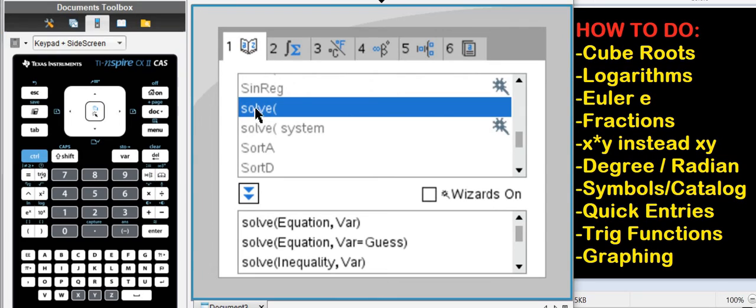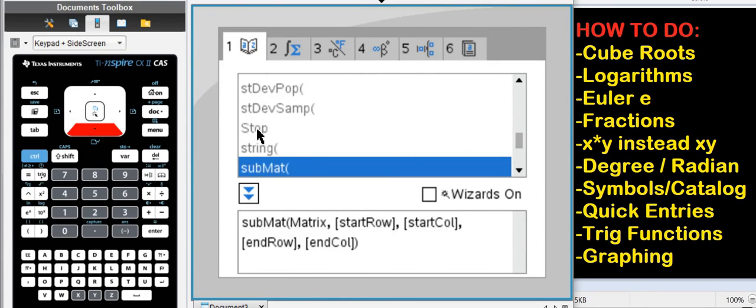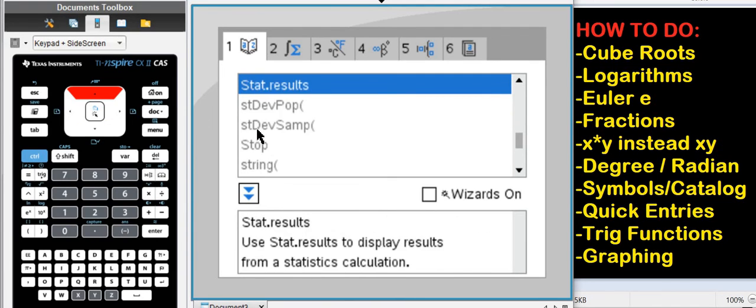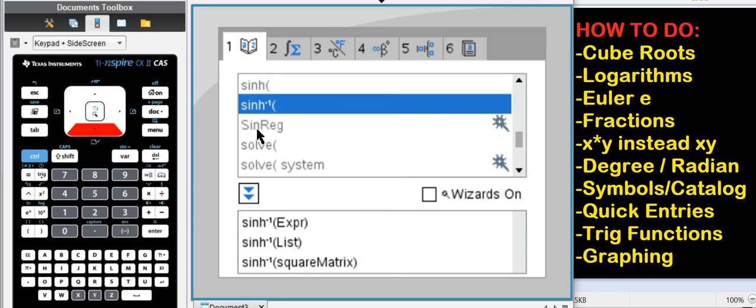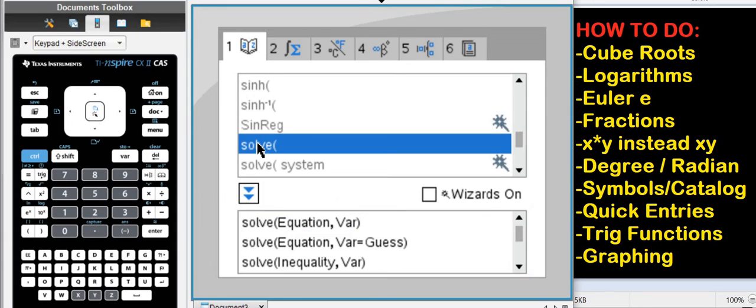This one has all the commands that you ever want to use. If you want to, for example, solve an equation, you can just scroll down and find solve. And down here, you can see how to use the solve command. It requires an equation, comma, a variable. So let's do that.